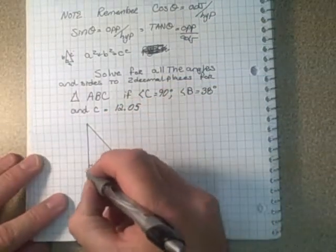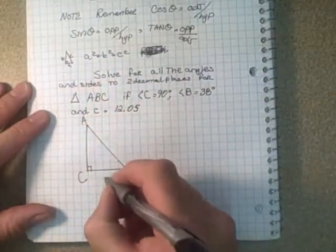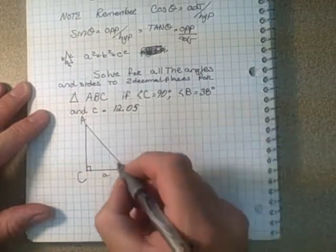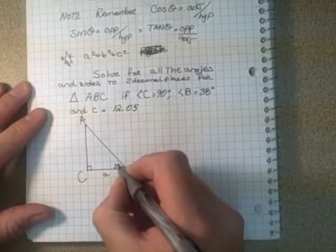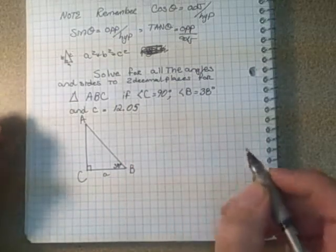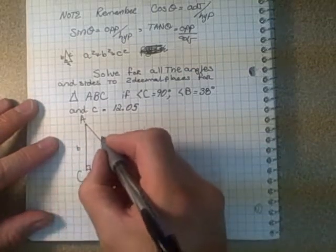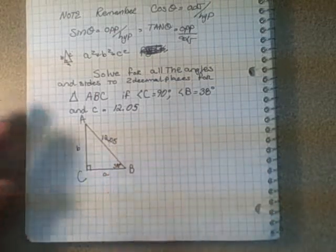Put in my C angle there, because I know that's C. I can say this one's A, so this would be side a, and this one's B, and B is given to me at 38 degrees. And this here would be side b. And we know that this one is 12.05. No units given, just a number.